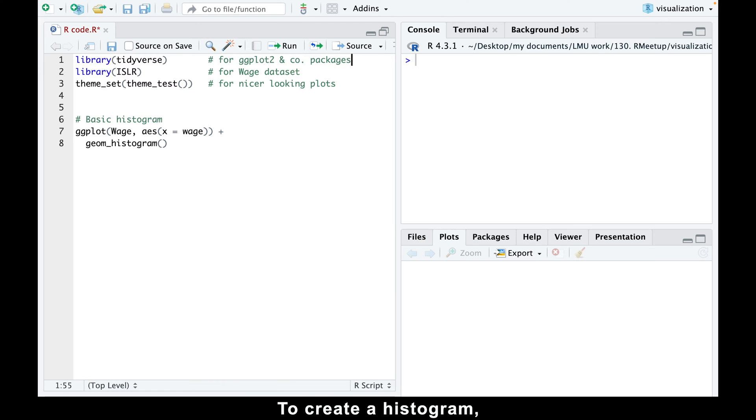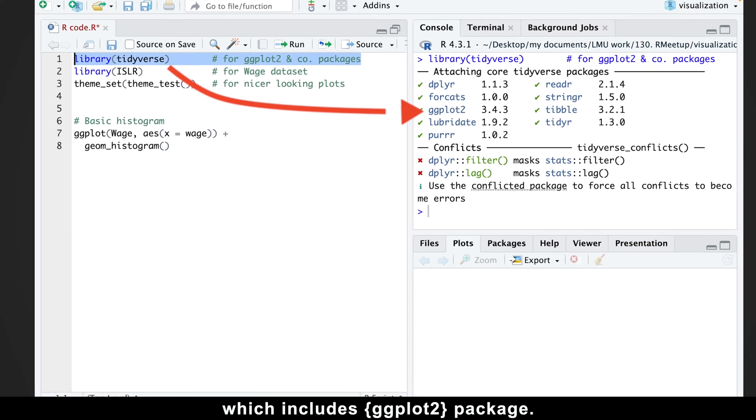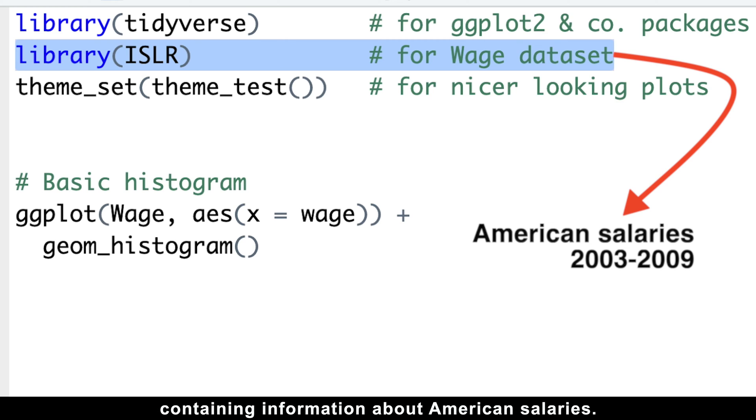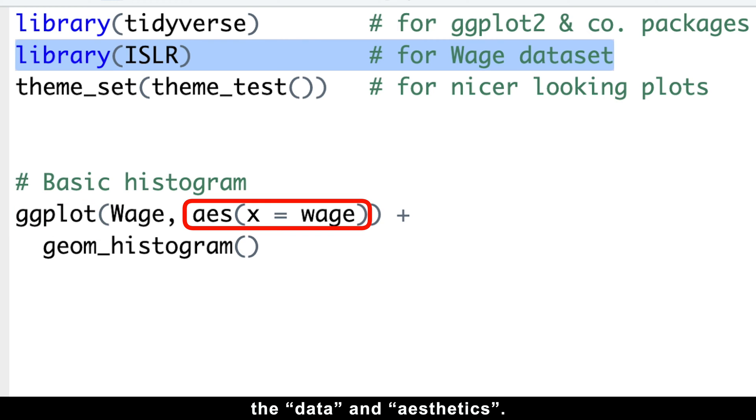To create a histogram, we'll first load the tidyverse meta package, which includes ggplot2 package. Additionally, we'll load the ISLR package to get the wage dataset containing information about American salaries. Next, we'll use the ggplot function with just two arguments, the data and aesthetics.